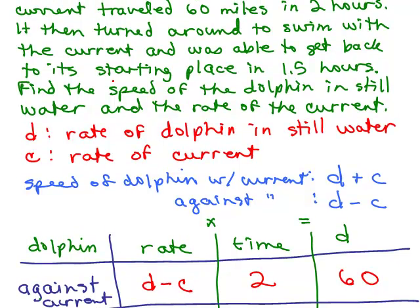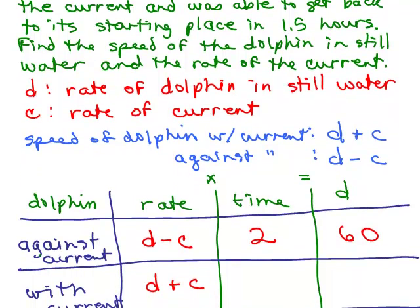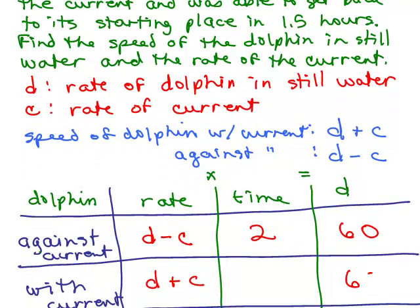He turned around, was able to get back to its starting place, which means what, he went the same amount of distance. So when he returned, he also went 60 miles. But the time is 1.5.